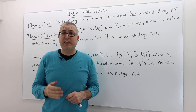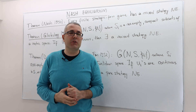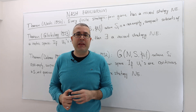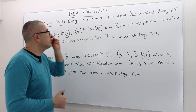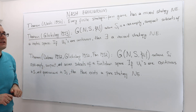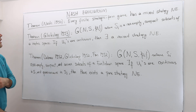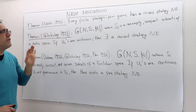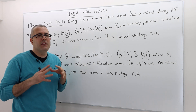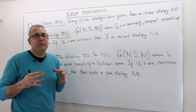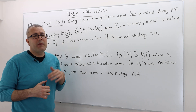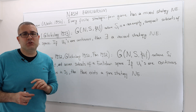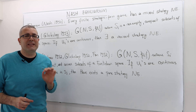I'll finish this episode by giving three important existence theorems. The question is: can we be sure a Nash equilibrium exists? The answer is positive under some assumptions. The first theorem was proved by John Nash in 1950. The Nash theorem states: for every finite strategic form game — meaning a finite set of players and each player has finitely many available strategies — there exists at least one mixed strategy Nash equilibrium. It may be a pure strategy, but there will definitely be at least one Nash equilibrium.